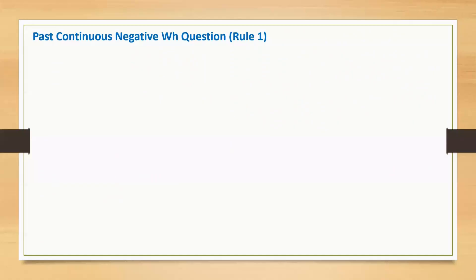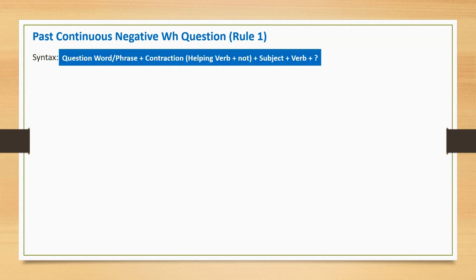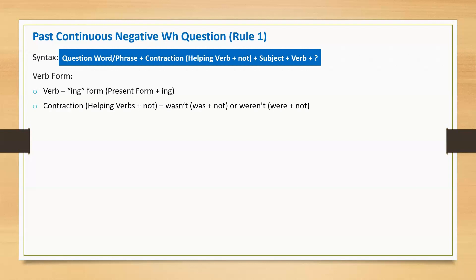Past continuous negative WH question. It is a negative interrogative statement and it starts with an interrogative pronoun. The syntax is: question word or phrase, followed by contraction of helping verb and 'not', then subject, main verb, and question mark at the end. Main verb is in the -ing form. 'Wasn't' is for singular and 'weren't' is for plural.